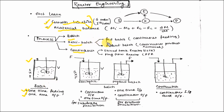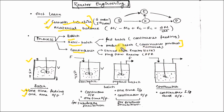Semi-batch processes can be divided into two types: fed batch and product batch. Fed batch involves continuous or intermittent feeding but no continuous output extraction — it is used for substrate inhibition processes. In product batch processes, continuous product removal is used, and it is applied for product inhibition processes.